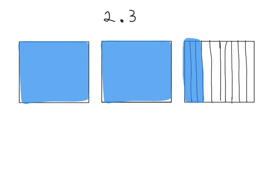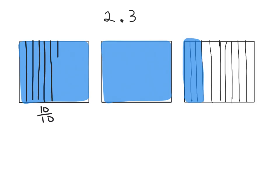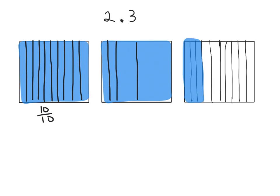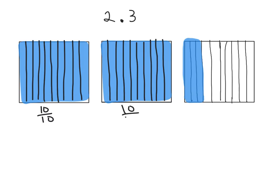Now, if I wanted this entire thing in terms of tenths — I know I have three tenths, but how many tenths do I have in each whole? I have 10 tenths. I can cut this whole into 10 strips, and this one into 10 strips as well. So that's 10 tenths plus 10 tenths plus another three tenths. Altogether, I can think of this as 23 tenths.